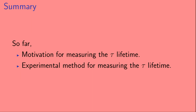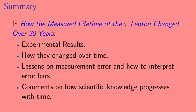Let's summarize what we've seen so far. We've seen the motivation for measuring the tau lifetime, and we've seen the basic experimental method for measuring it. In the second video in this series, we'll look at the actual experimental results, see how they changed over time, learn some lessons on measurement error and how to interpret error bars, and make some comments on how scientific knowledge progresses with time.